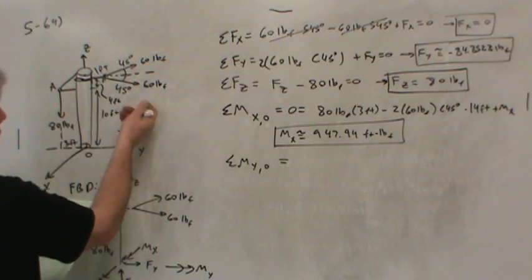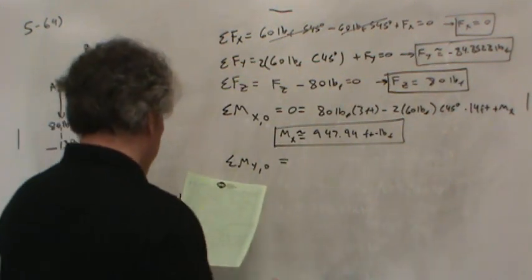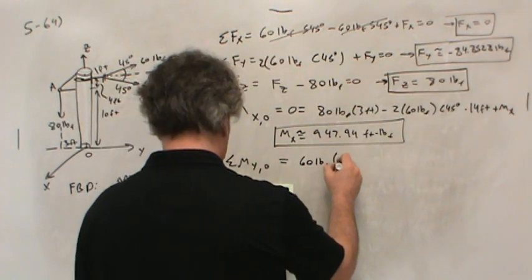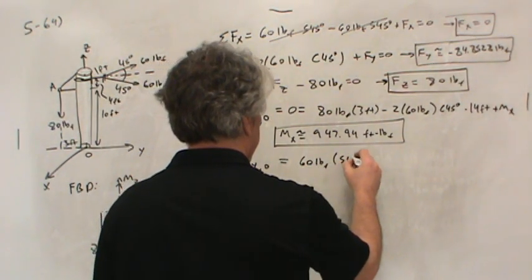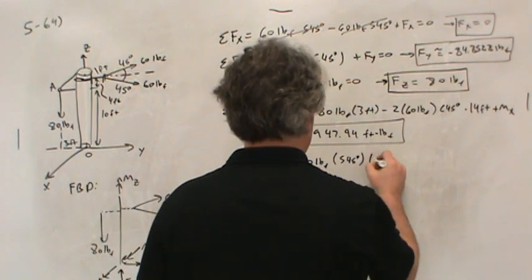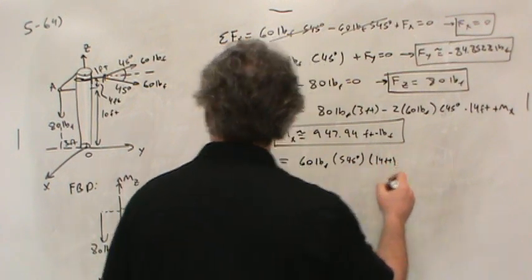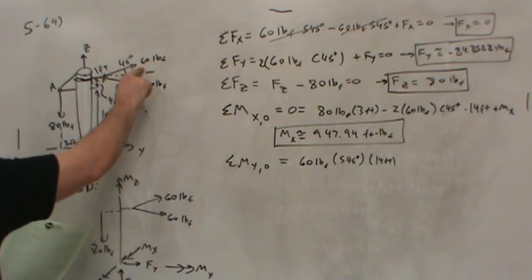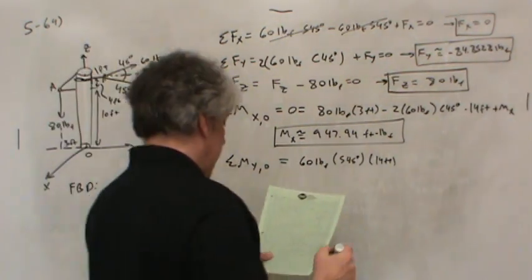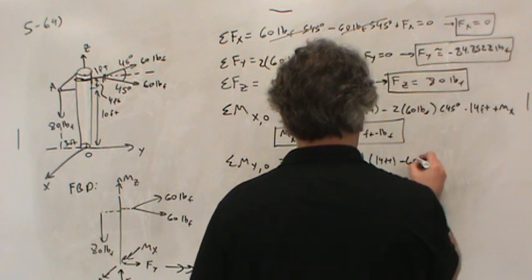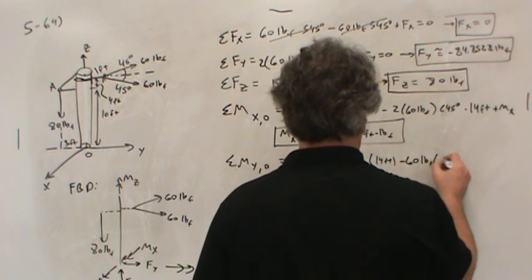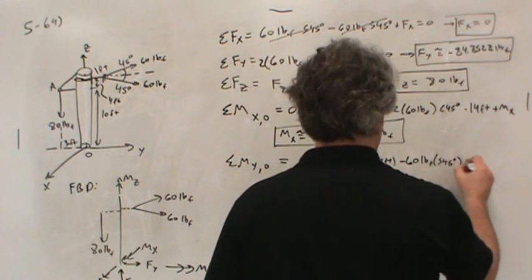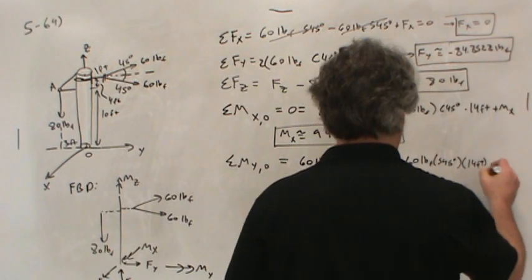So that would be 60 pounds multiplied by sine of 45 degrees multiplied then by the 14-foot moment arm. Notice the moment arm is here. But then this 60-pound load acts in the opposite direction. So, minus 60 pounds times sine 45 degrees times the same 14-foot moment arm.